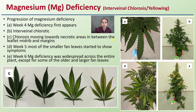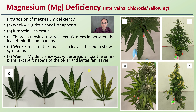Magnesium deficiency is represented by interveinal chlorosis or yellowing. At week four it's first starting to appear, showing interveinal chlorotic regions as the area moves toward necrotic zones between the leaflet midrib and margins — the veins stay really dark green while the areas in between yellow. By week five, most smaller fan leaves show symptoms, and by week six, magnesium deficiency was widespread across the entire plant except for some older, larger fan leaves.